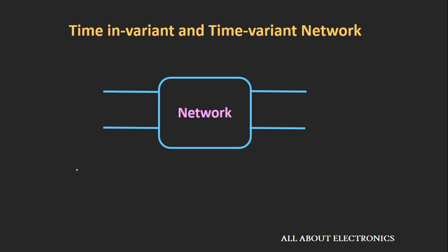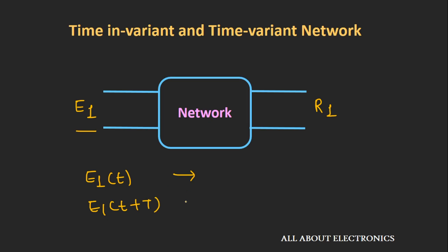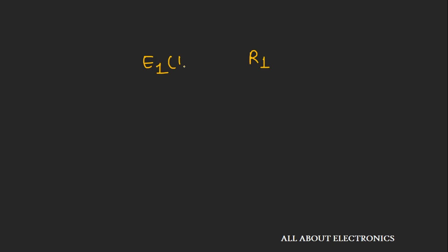The fifth kind of network is the time invariant and the time variant. Assume a network where applying excitation E1 gives response R1. The network is time invariant if response R1 is independent of the time at which the excitation is applied — whether we apply the excitation at time T or time T plus T, we get the same response R1. In a time-variant network, the response depends on when the excitation is applied: applying at time T gives R1, but applying the same excitation at time T plus T gives a different response R2.